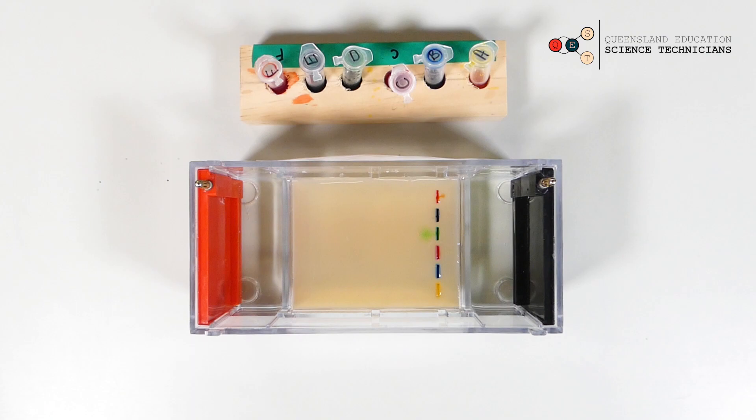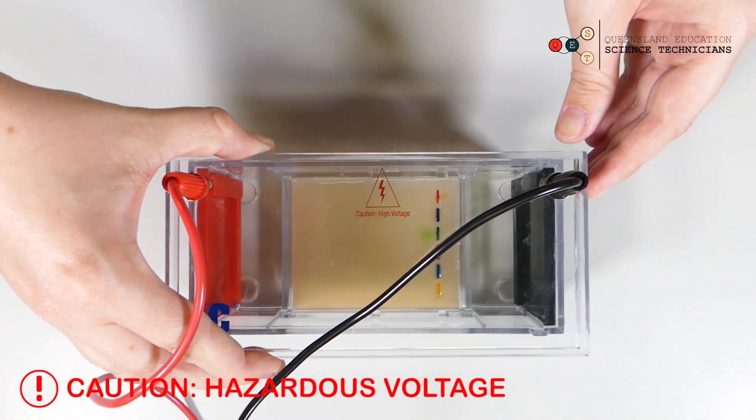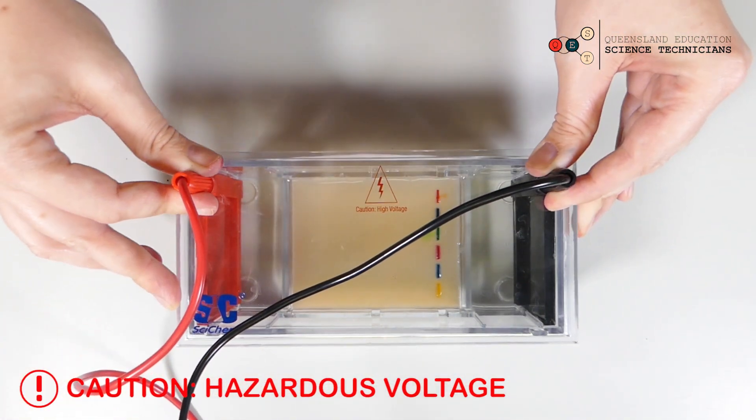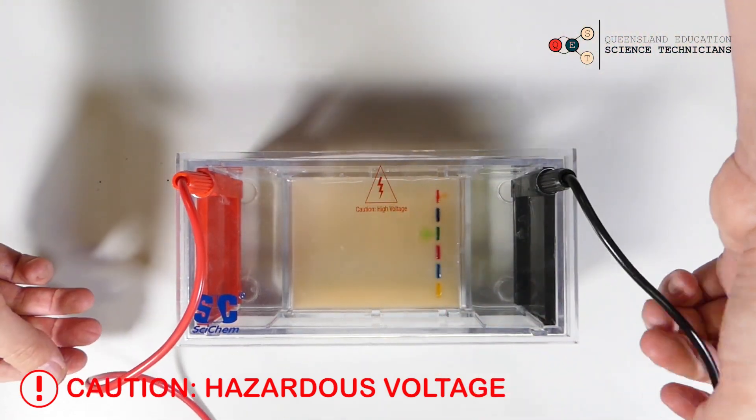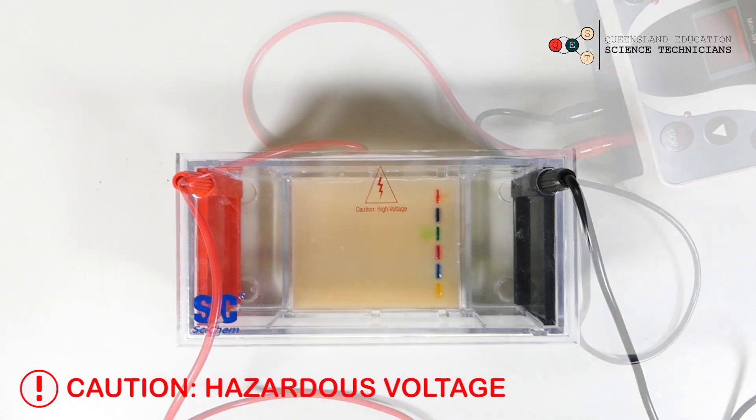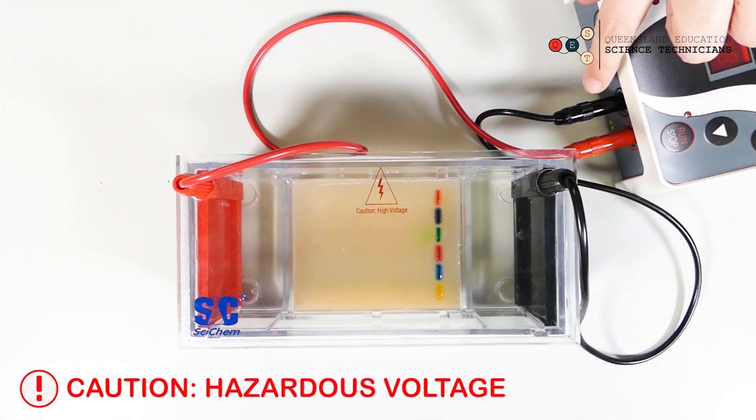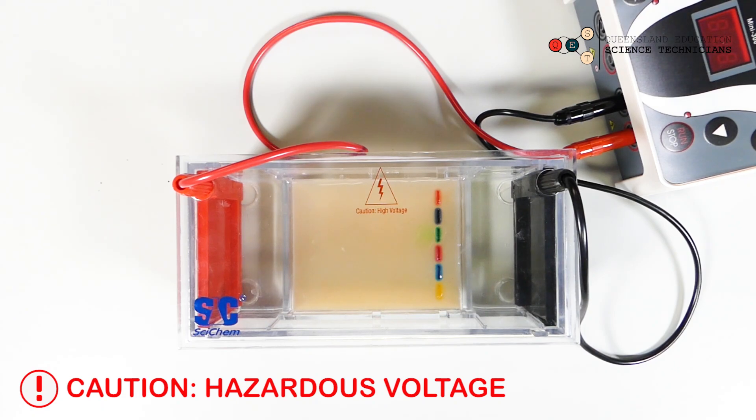It's a little bit messy but that's okay. Now we need to fit the lid of our chamber on. It's black to black, red to red. Hook this up to our power supply. So you've got your lid on, you've connected your leads to your power pack, black to black, red to red. Turn your power pack on.